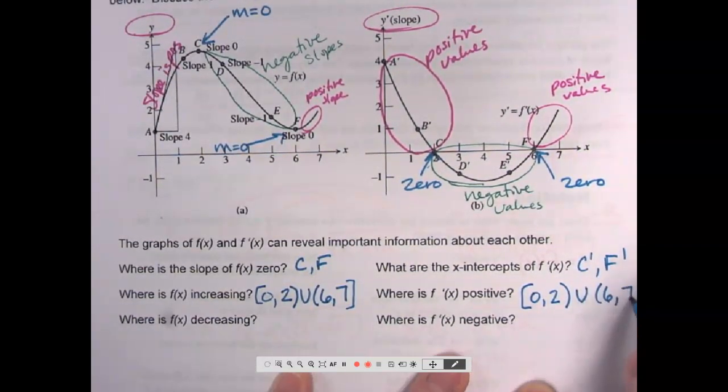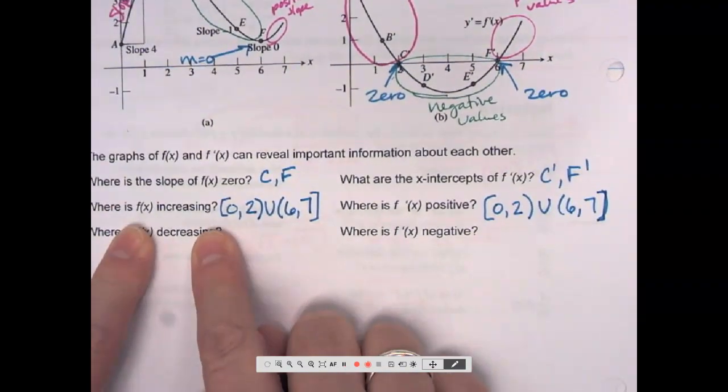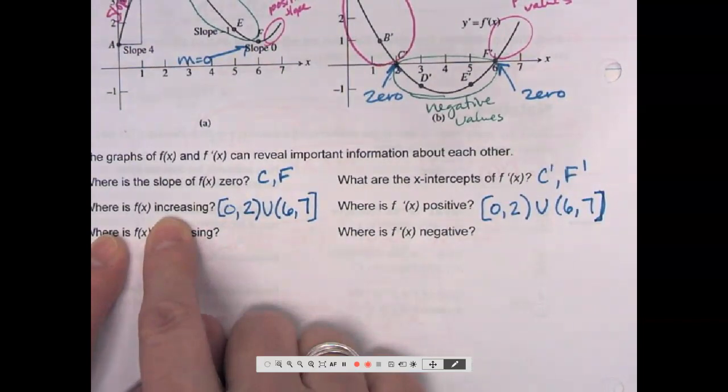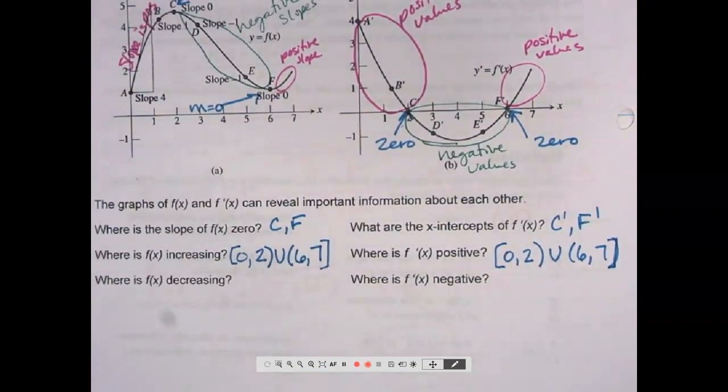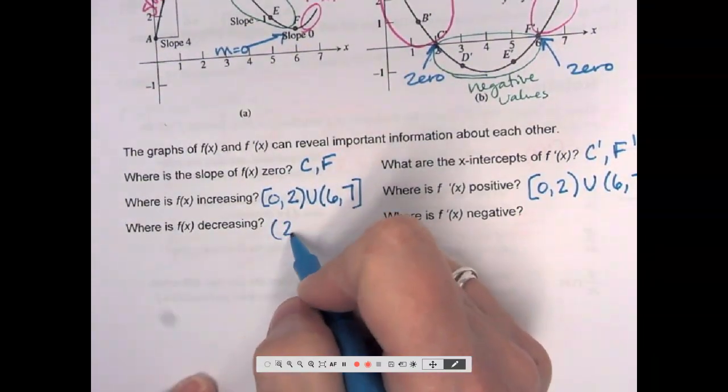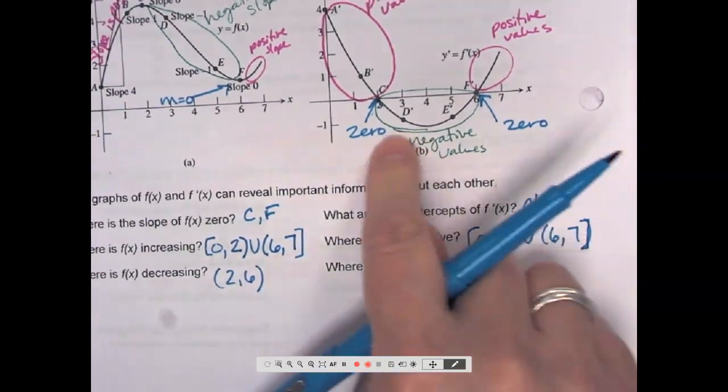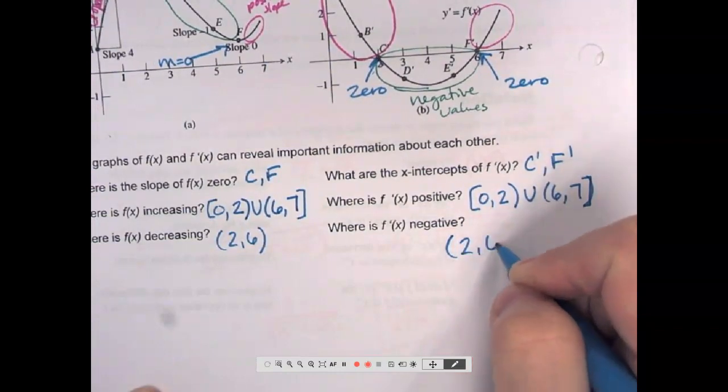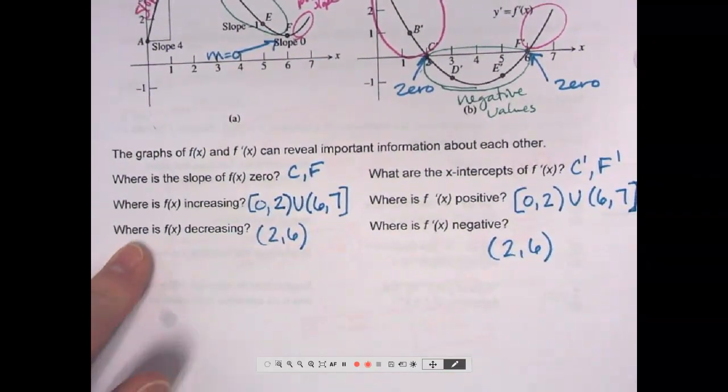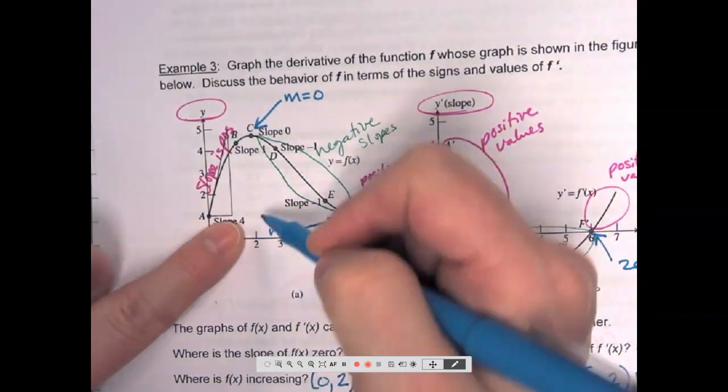So what that tells me is if a function is increasing, that tells me the derivatives will be positive. Or where derivatives are positive, the function was increasing. Where was the function decreasing? Going left to right, where were we going? Downhill. Between C and F. Which means between 2 and 6. That is not an ordered pair. It means between 2 and 6. Where is F prime negative? The same thing. Between 2 and 6. So having a negative derivative tells us that the function was decreasing. If a function is decreasing, we should expect a negative derivative.